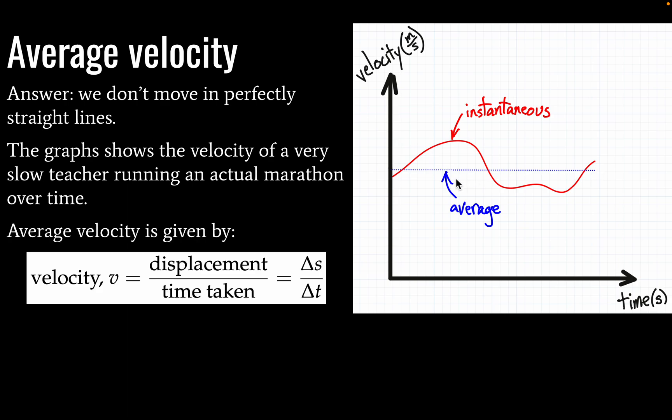Okay, so our average velocity is given by displacement divided by time taken, and we've already seen this equation.